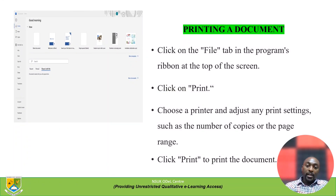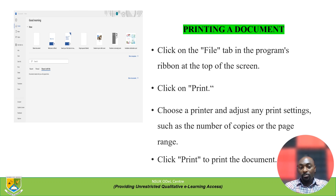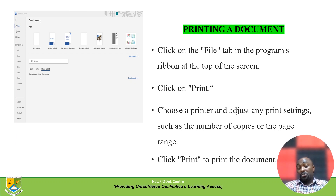To print a document, click on the File tab in the program's ribbon at the top of the screen, navigate to Print, choose an active printer from the printers installed on your system, and adjust any print settings such as number of copies or page range. In some cases you may want to print the entire document, then click Print to print the document.